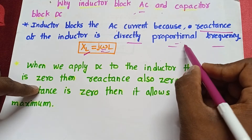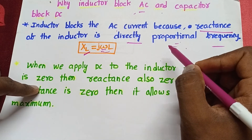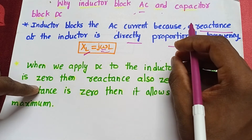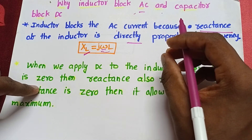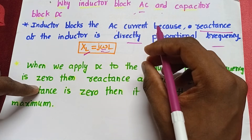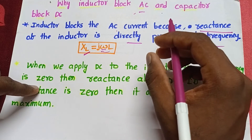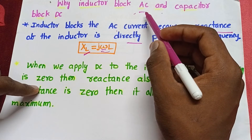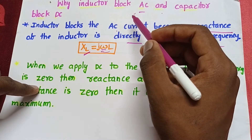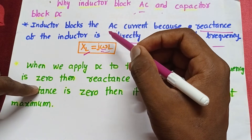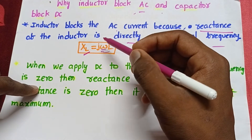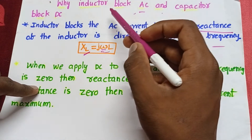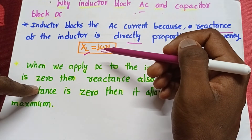The first point we should remember: if we have a reactance, then the inductor does not allow the current. Whenever the current has a frequency, then only we have reactance. When we apply AC current, AC current must have some frequency. Due to that frequency, the inductor has some reactance, and due to that reactance, the inductor blocks the AC current.